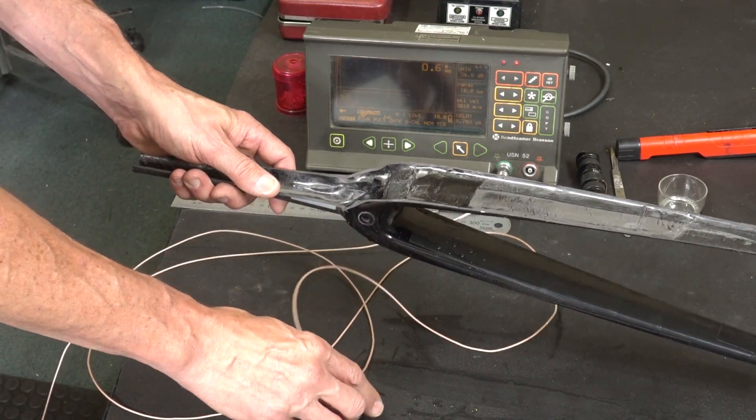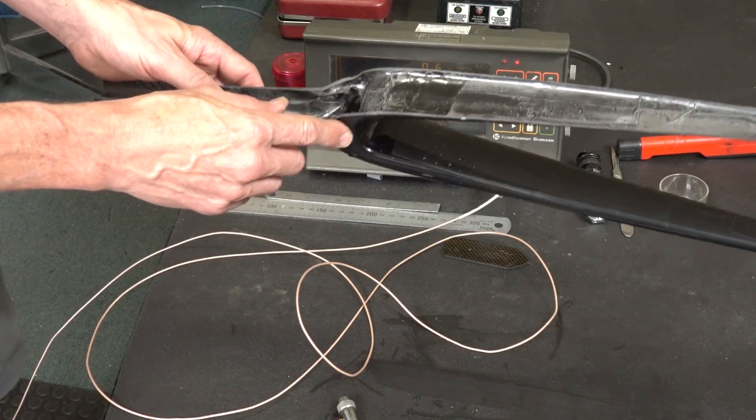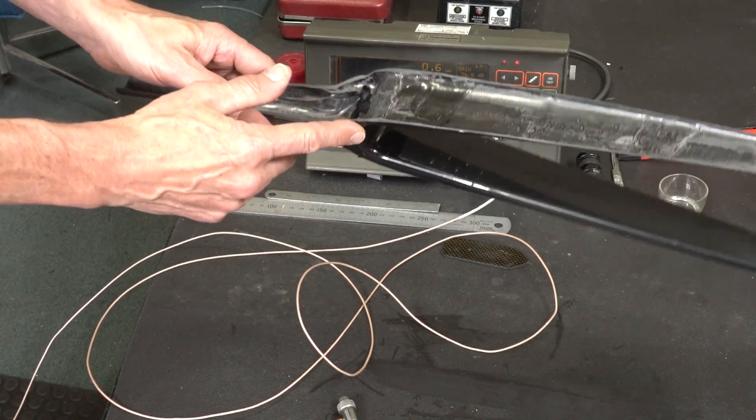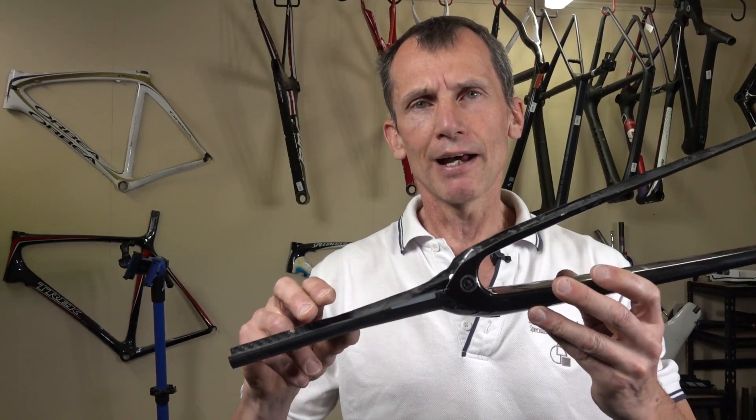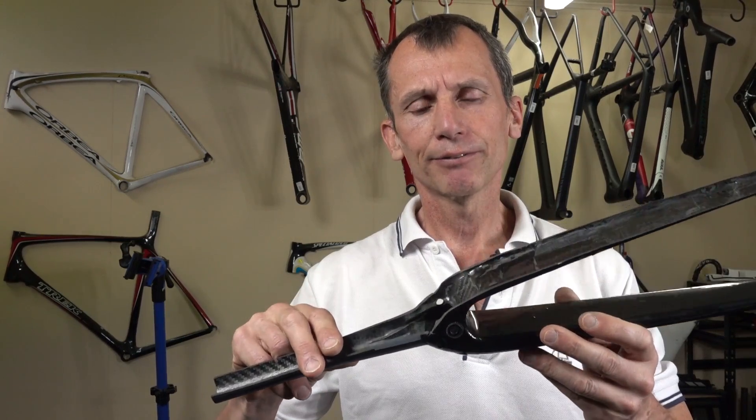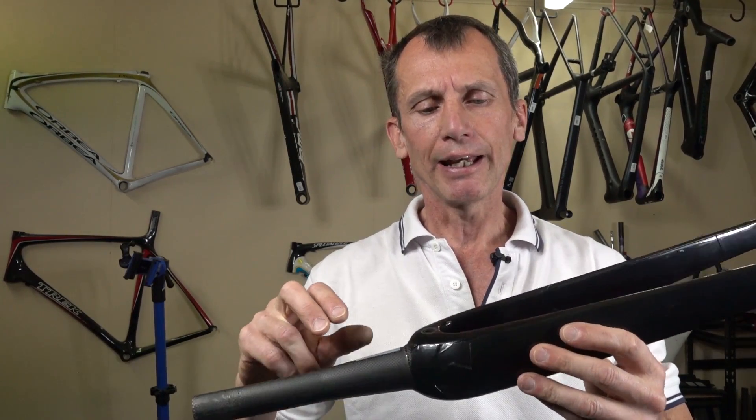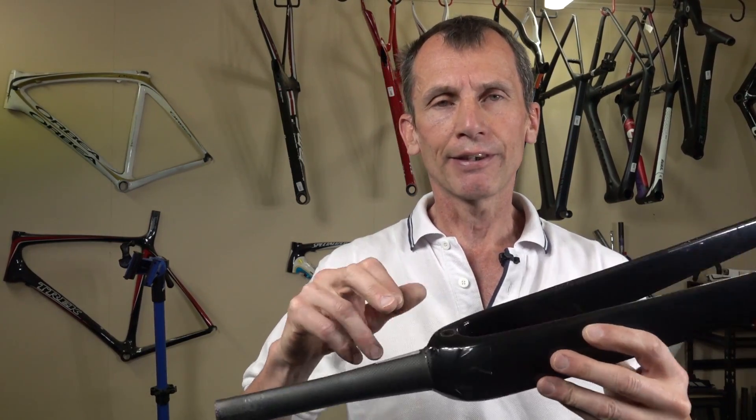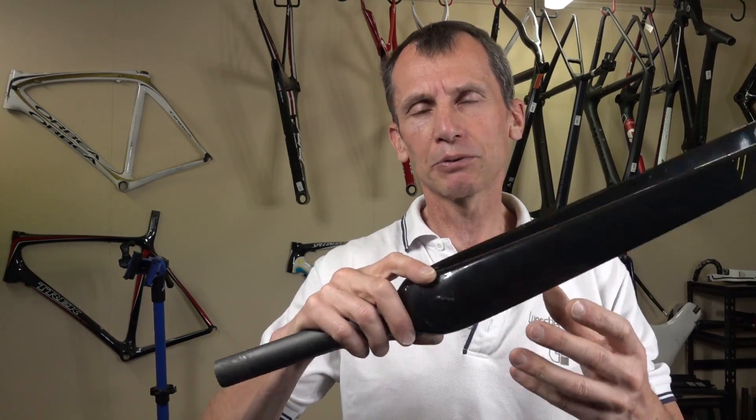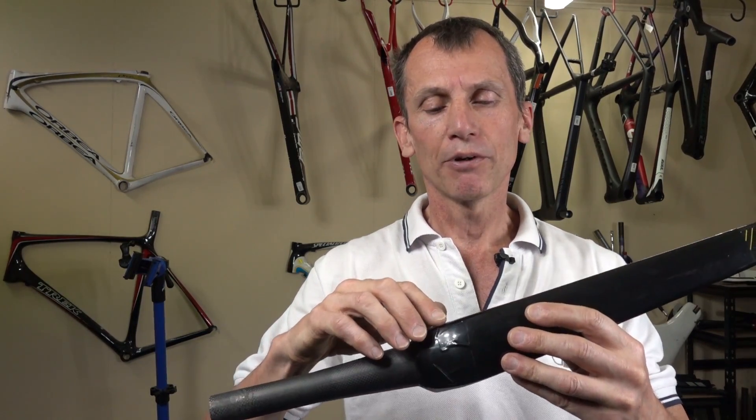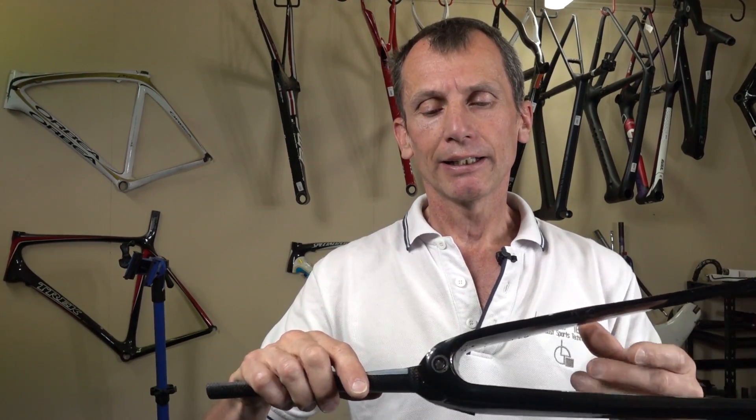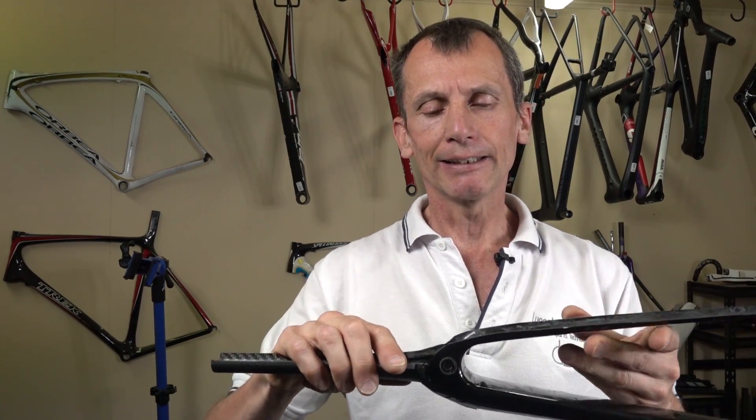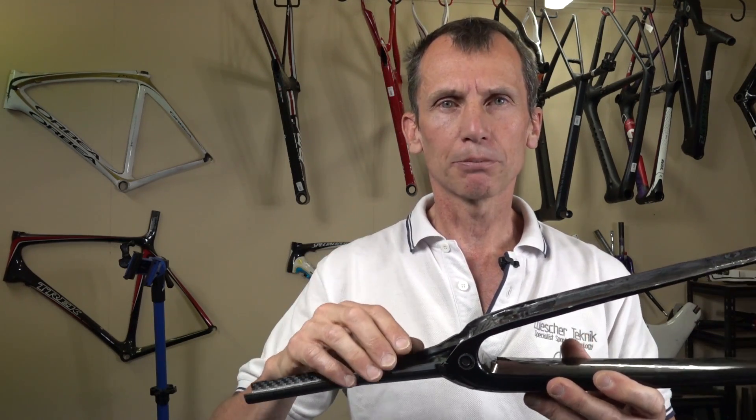So that's just an example of the scan and how we find voids in the crown of forks. As you can see in the scan, we found some areas of concern, and that also on the other leg which hasn't been cut open, we found similar indications on the front and the back. So clearly it's a production process problem.